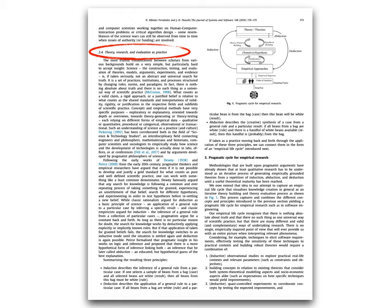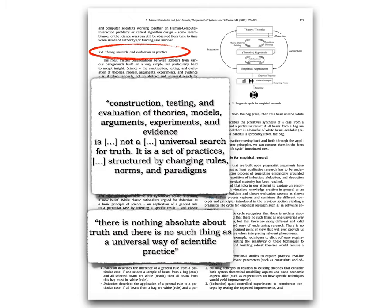We then move on and talk about theory, research, and evaluation as a scientific practice, and show that the construction and evaluation of theories, models, and arguments is to be seen as a set of practices, structured by changing rules, norms, and paradigms. There is really nothing absolute about truth.